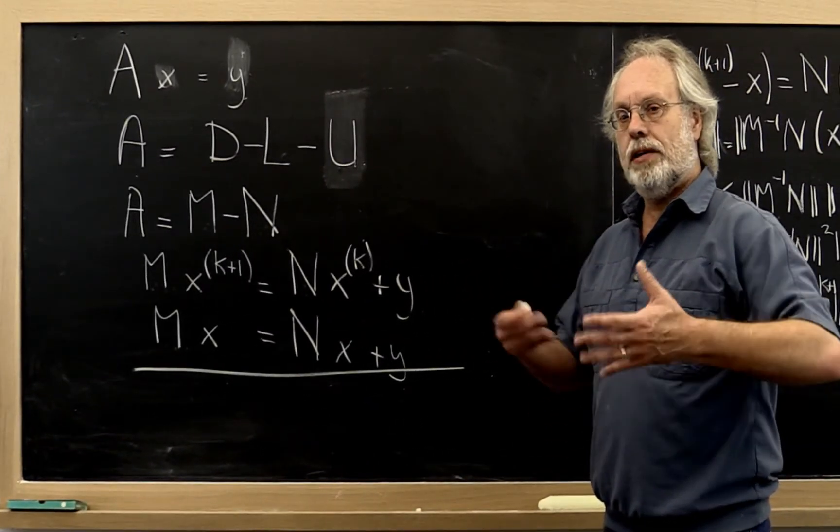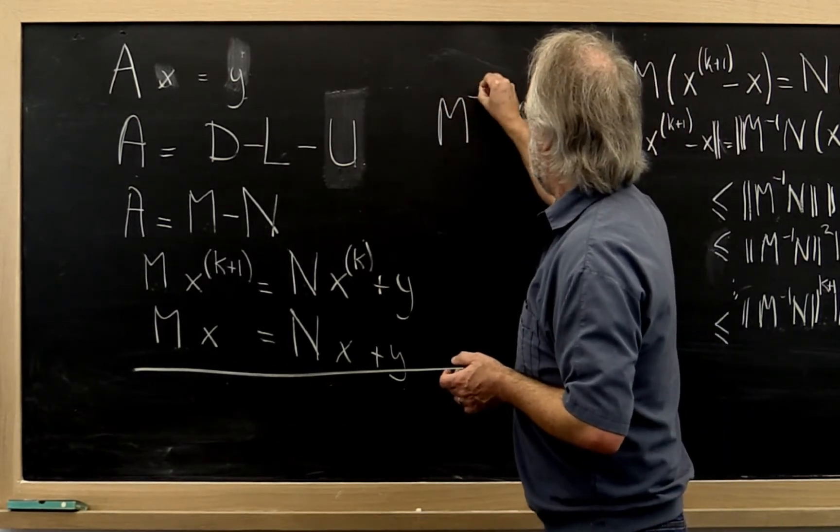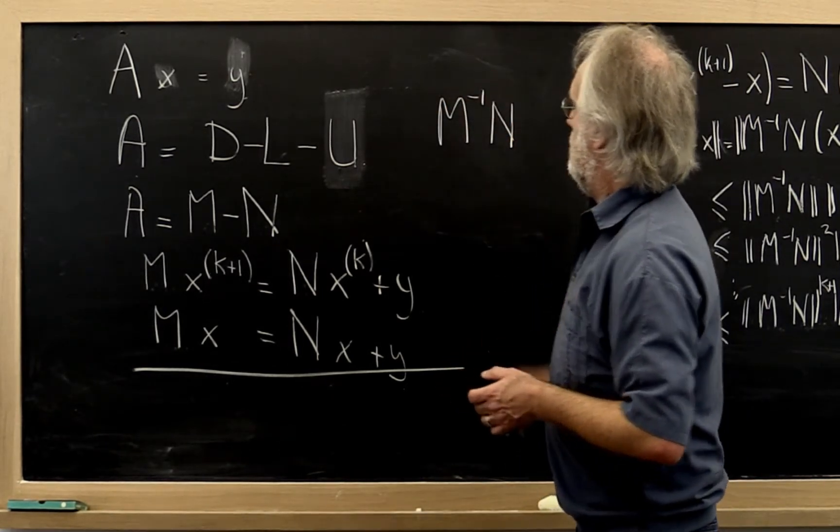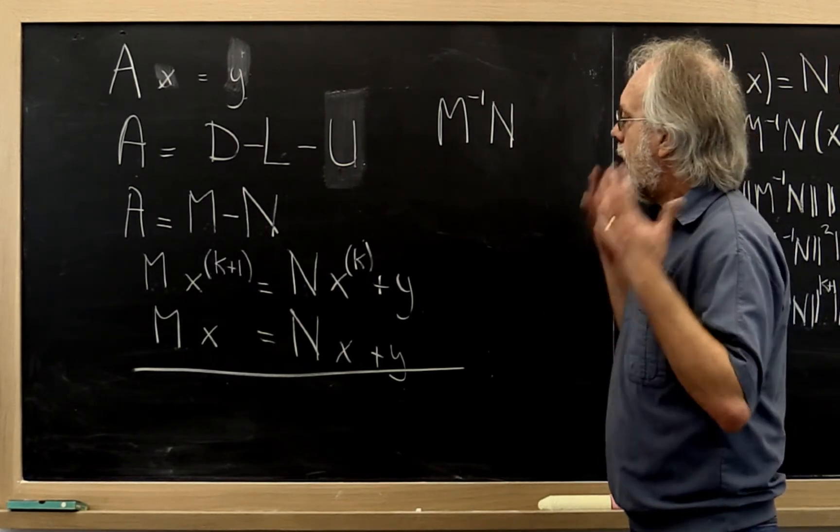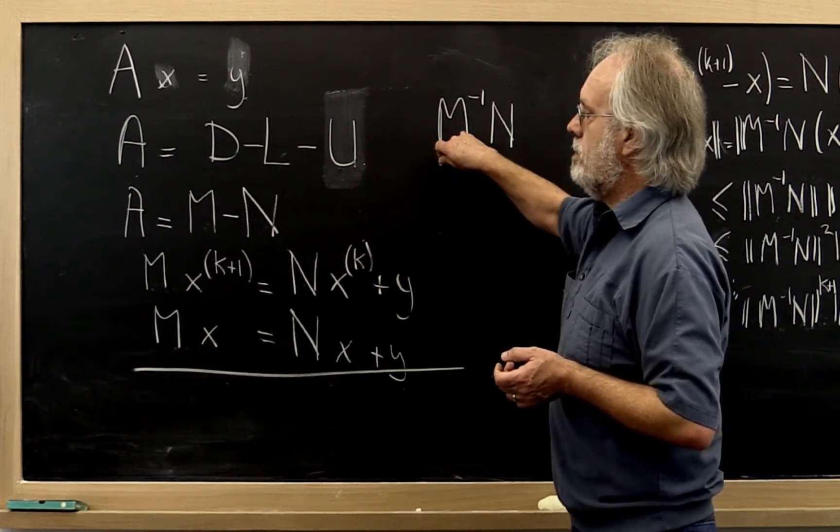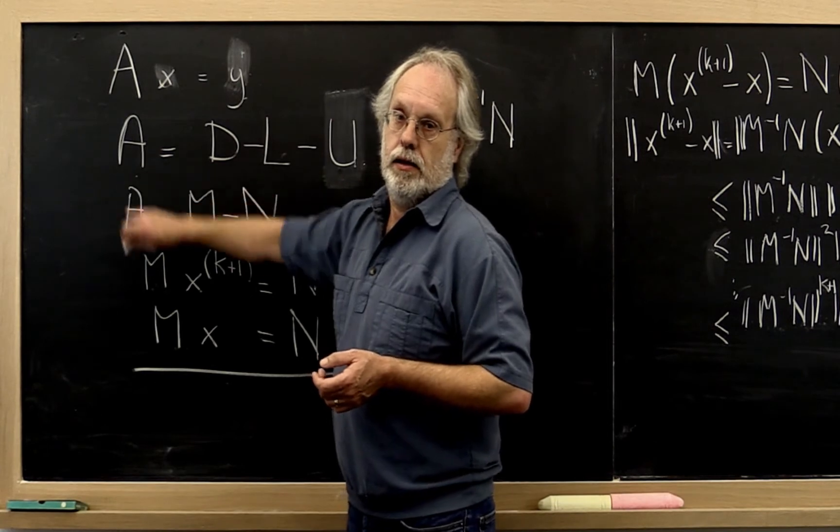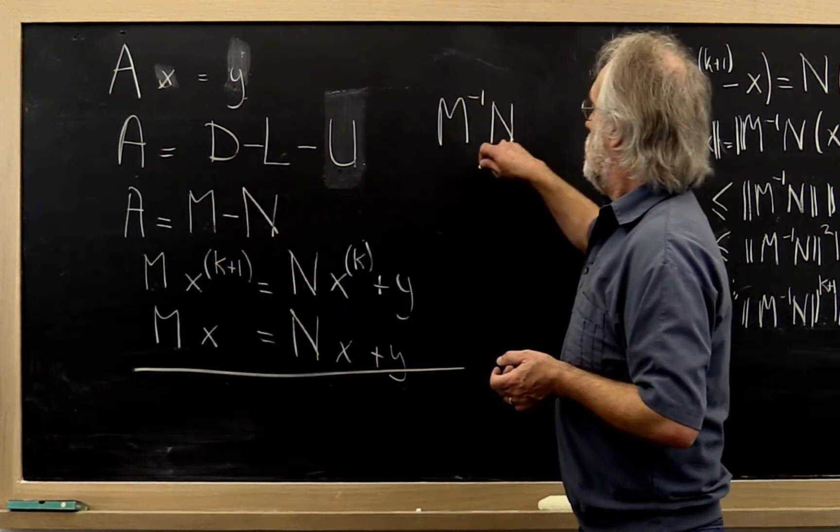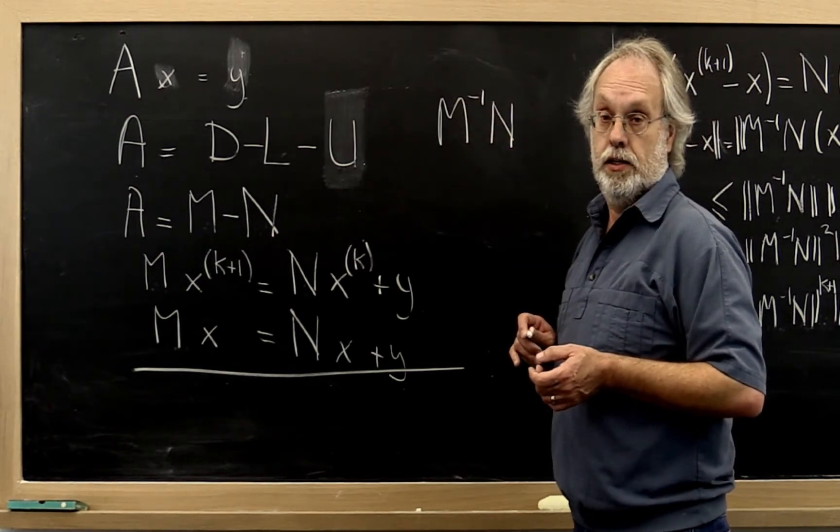So let's think about this a little bit more yet. What makes M inverse N small? The way I always think about it is that the more matrix M resembles A, the smaller the norm of M inverse N is.